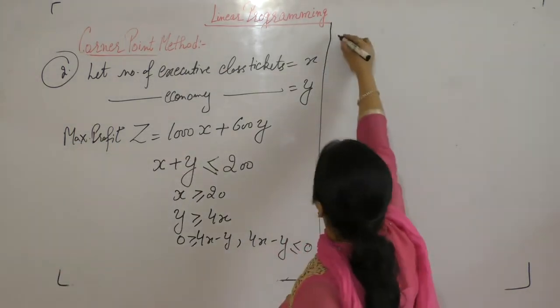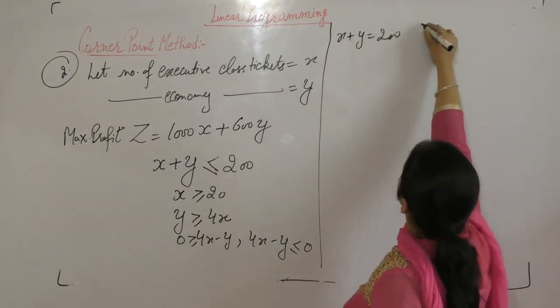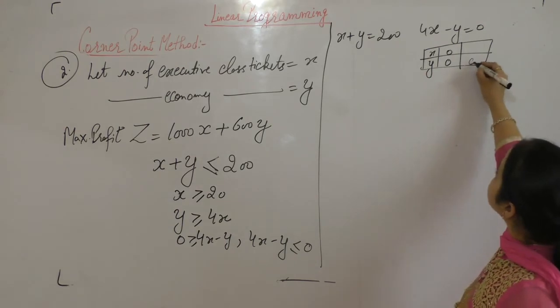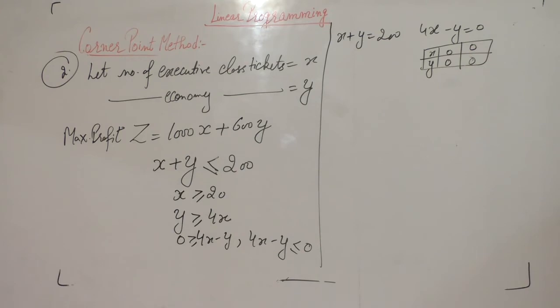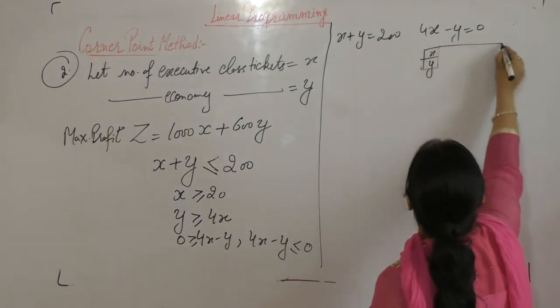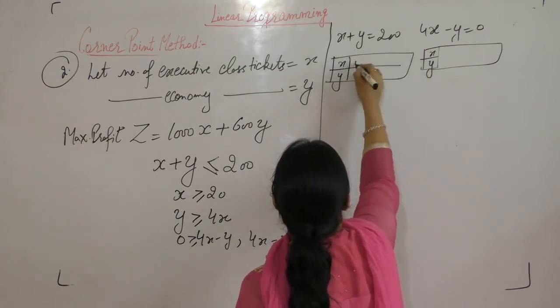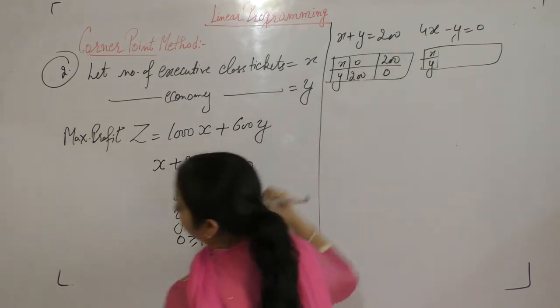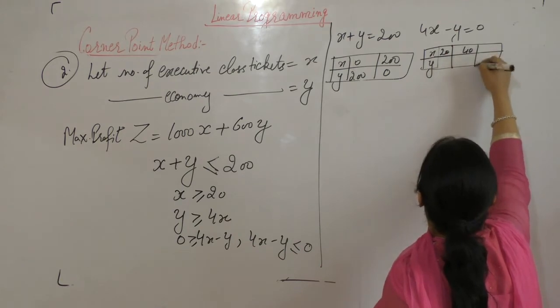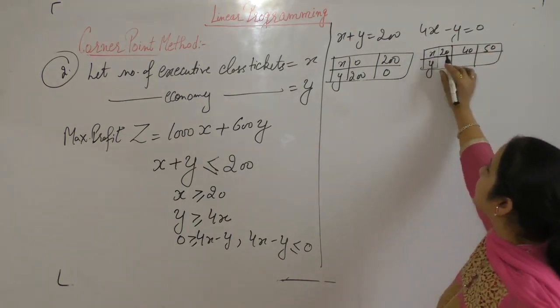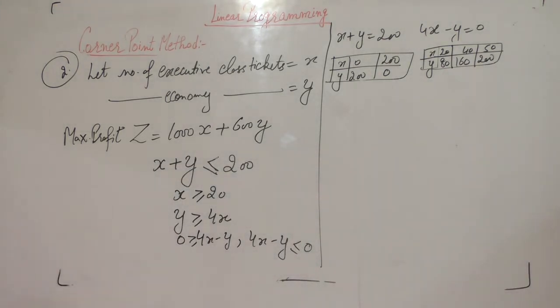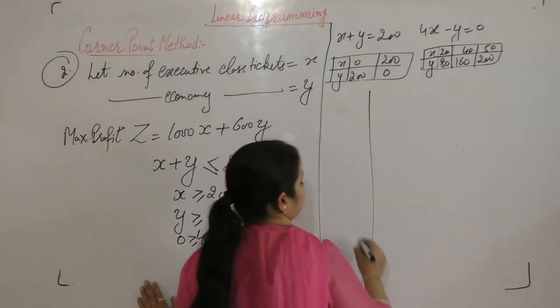Now change the inequalities into equality. x equals 20. When x is 0, y is 0. When y is 0, then x is 0. For x plus y equals 200, when x is 0, y is 200, and when y is 0, then x is 200. For 4x minus y equals 0, when x is 20, y is 80. When x is 40, y is 160. When x is 50, y is 200. We have to draw these points on x, y plane.